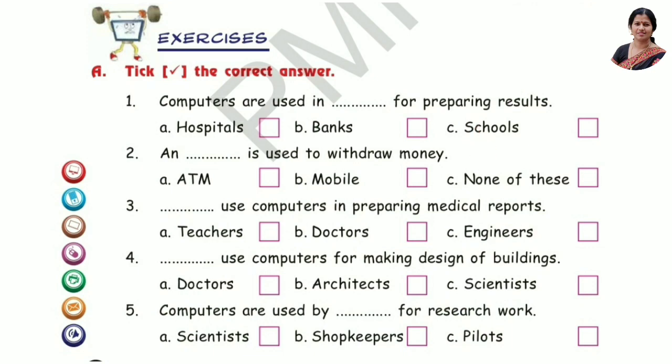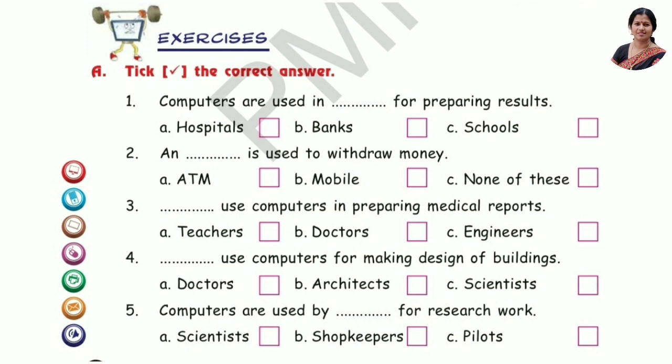Question 2: A DASH is used to withdraw money. Options are ATM, Mobile, None of these. The answer is Option A: ATM.